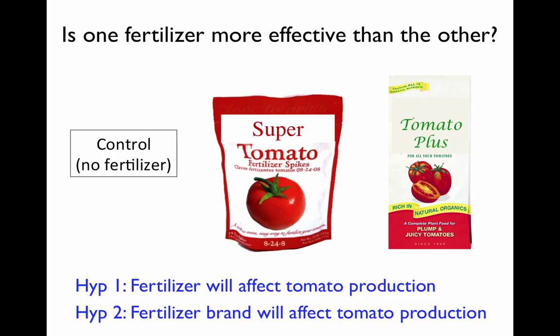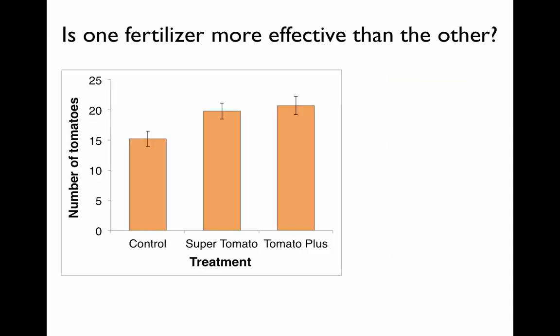Once we've carried out this experiment and go to graph our data, we would get a bar graph with three bars — one for our control and one for each fertilizer brand. Here's the data we collected. You can see that the height of each bar corresponds to the mean tomato number measured in each treatment, and we have some standard error or variation around all the means.